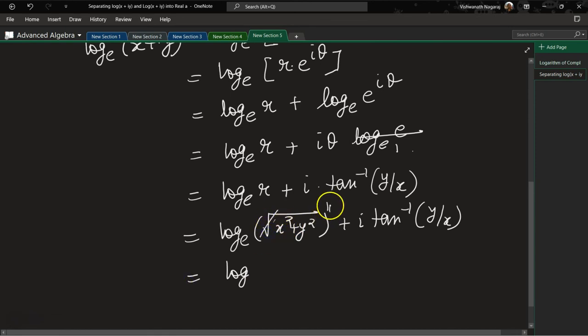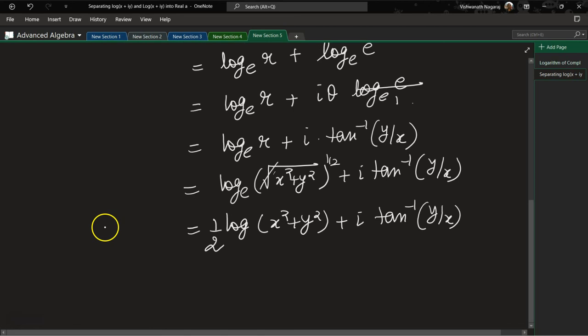Again, the square root can be written as 1/2, and that 1/2 can be brought in front, so (1/2)log(x² + y²) + i tan⁻¹(y/x). So that is what here on the left hand side: log_e(x + iy). So now this is the principle value.